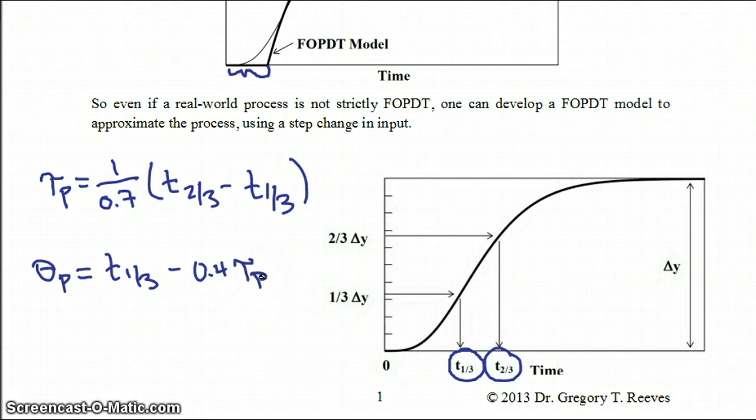So you can see that even if this process which clearly is not first order plus dead time, you can make an approximation of it using these metrics.